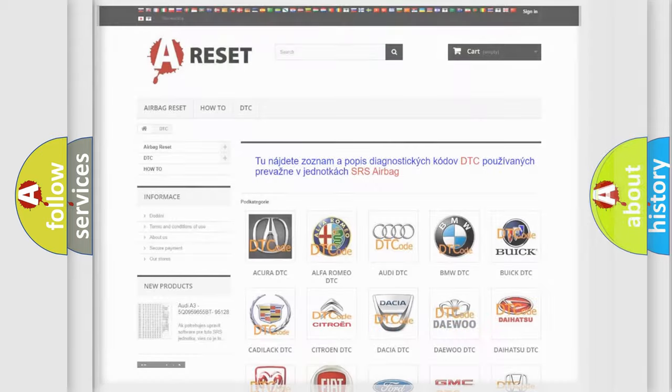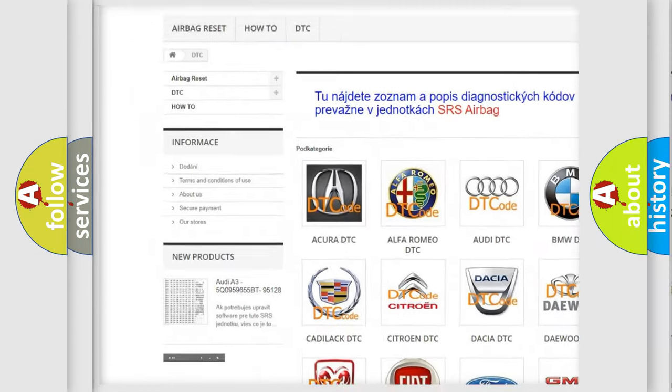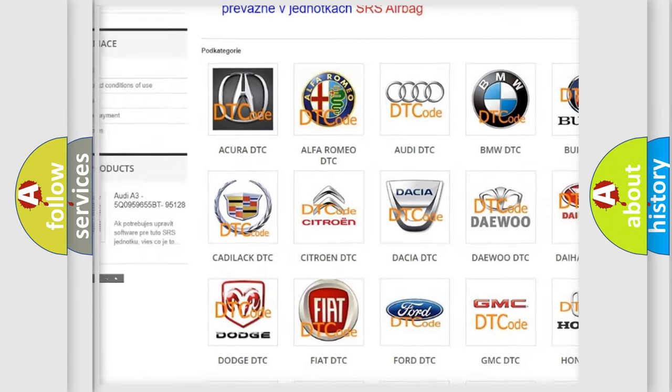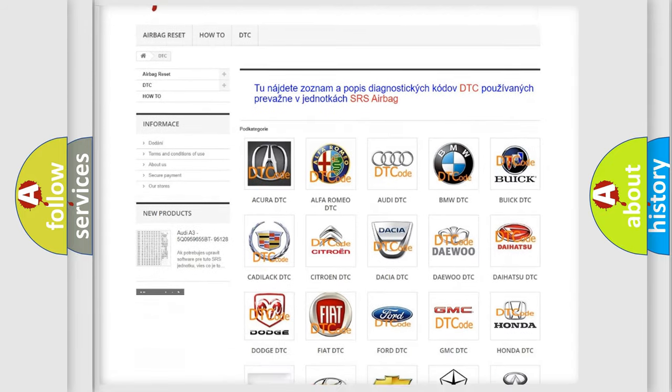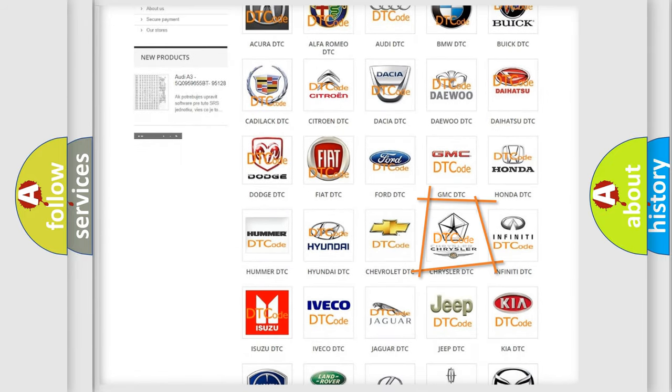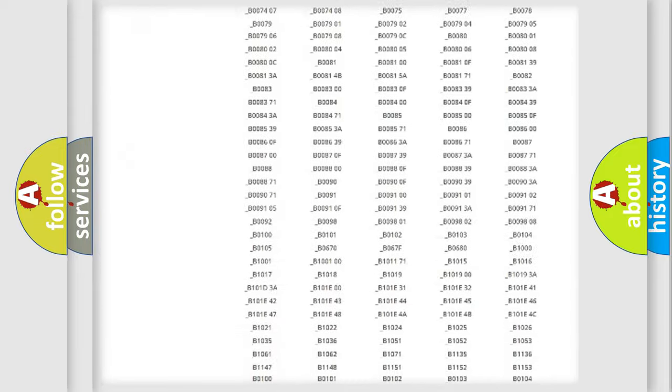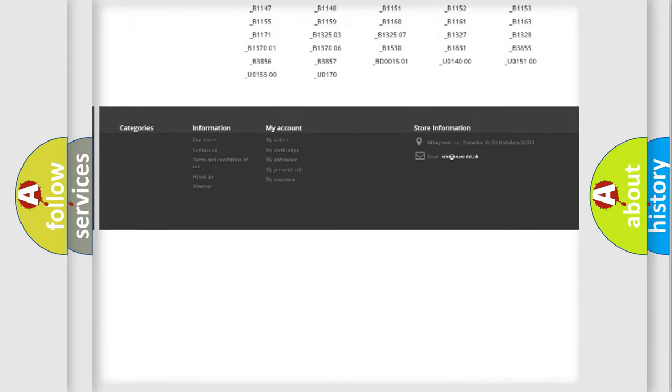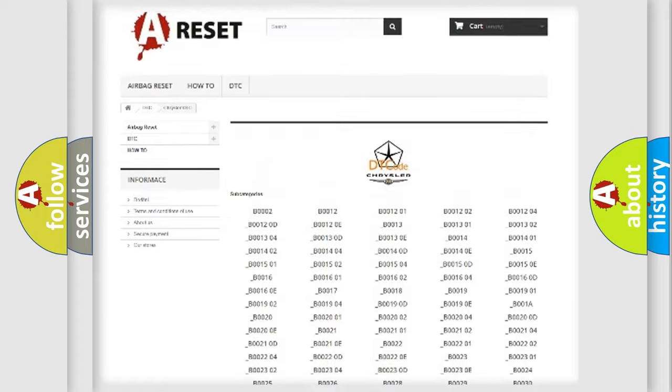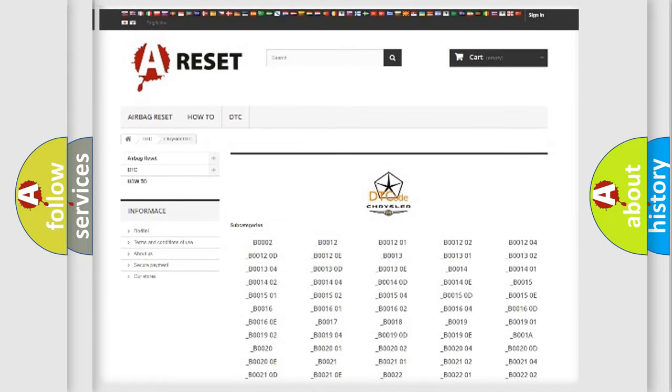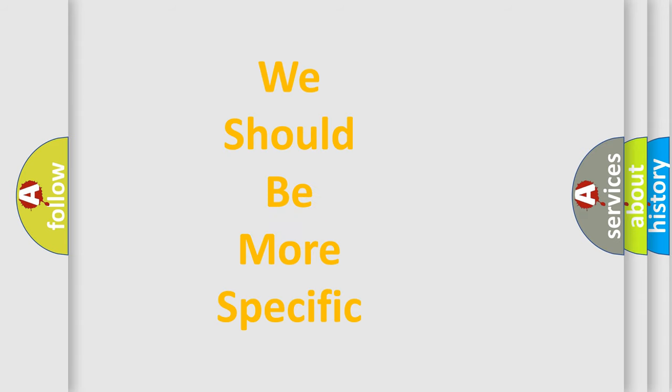Our website airbagreset.sk produces useful videos for you. You do not have to go through the OBD2 protocol anymore to know how to troubleshoot any car breakdown. You will find all the diagnostic codes that can be diagnosed in Chrysler vehicles, and many other useful things. The following demonstration will help you look into the world of software for car control units.